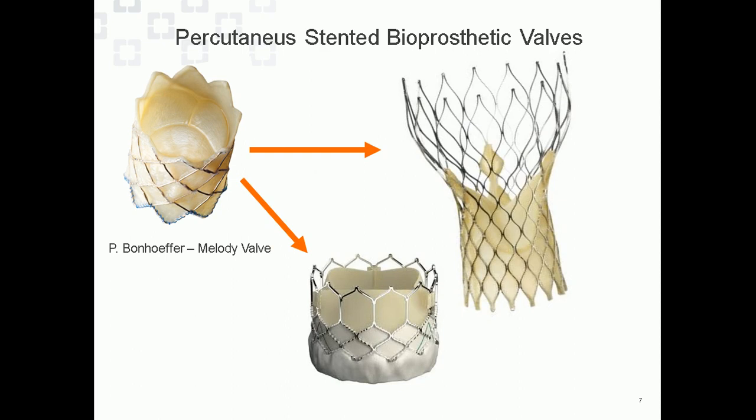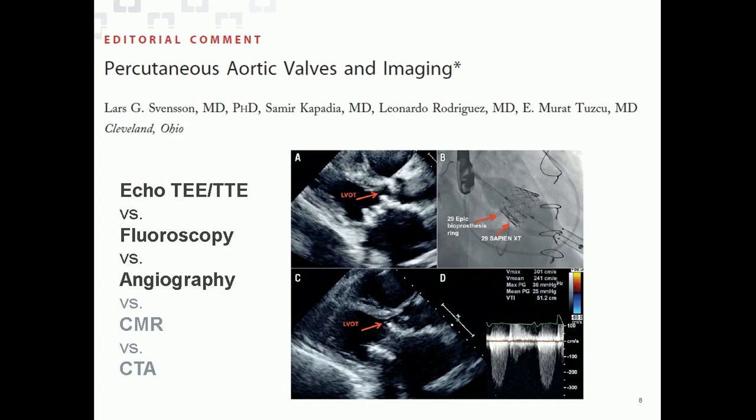The difference between a surgically implanted mechanical valve and a percutaneous design is that you can't physically size the valve by looking at it and placing a valve sizer into the annulus. With a percutaneous valve, the chest is closed and there's no way to do it at the time of surgery. You have to think about what imaging modality can be used to prepare for correct valve implantation sizing. Typically we use echocardiography — TEE or TTE — fluoroscopy and angiography, depending on the assessment timing.